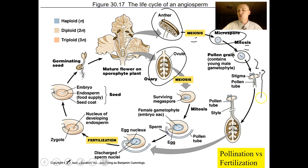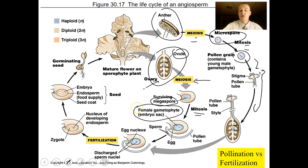A pollen tube will grow down until it reaches the ovules. Inside the ovary there are structures called ovules, and inside the ovule there are cells called megaspore mother cells that undergo meiosis to produce megaspores. The megaspore undergoes mitosis to form a female gametophyte made of something in the order of seven cells.